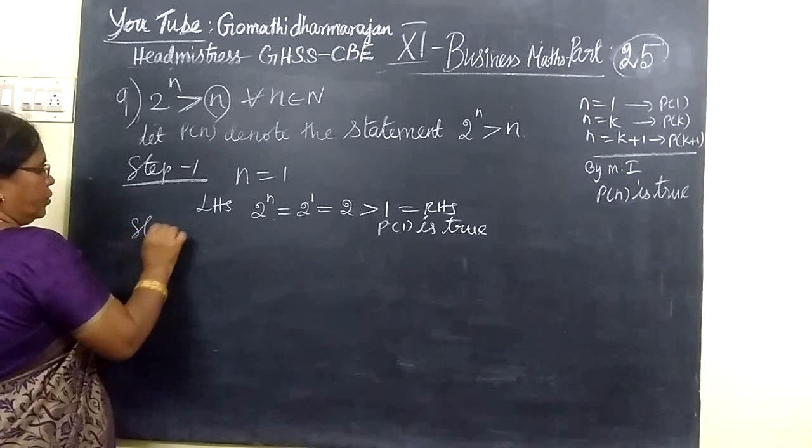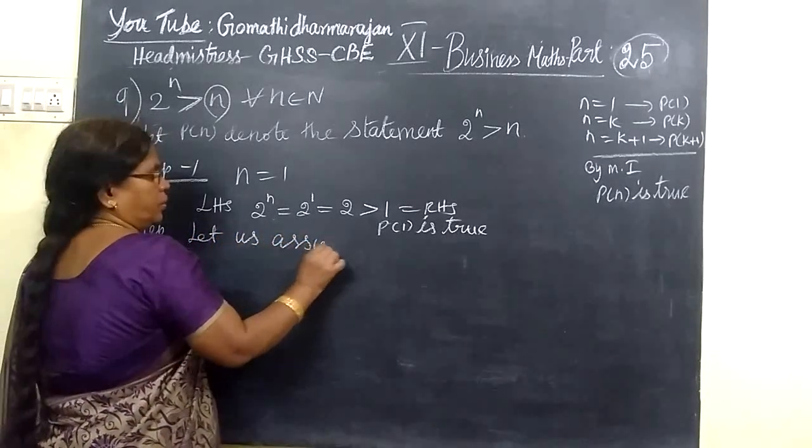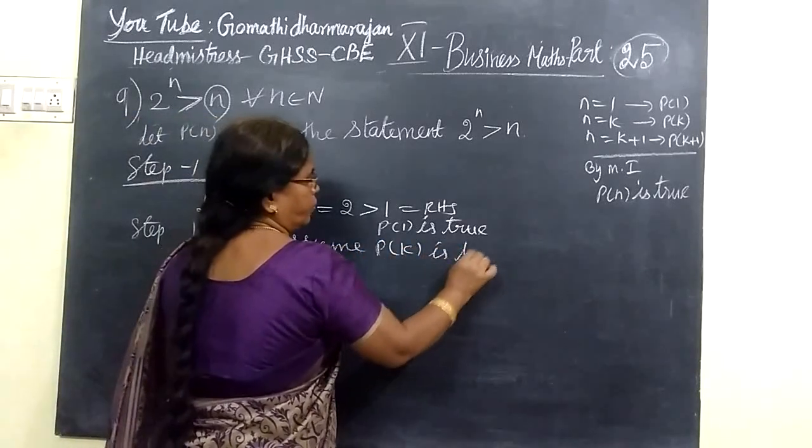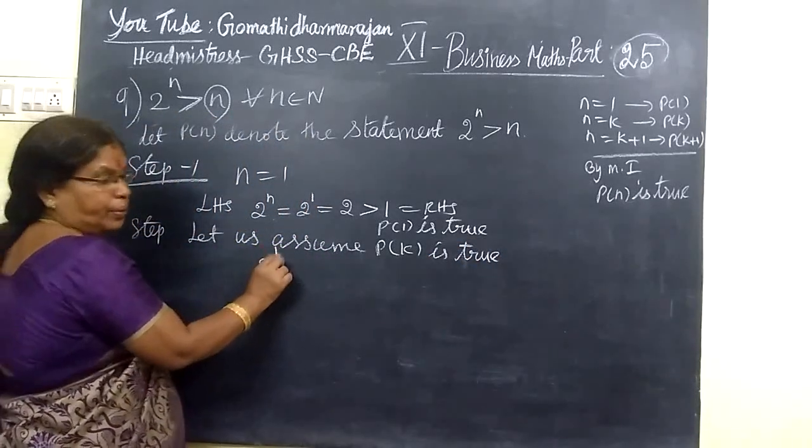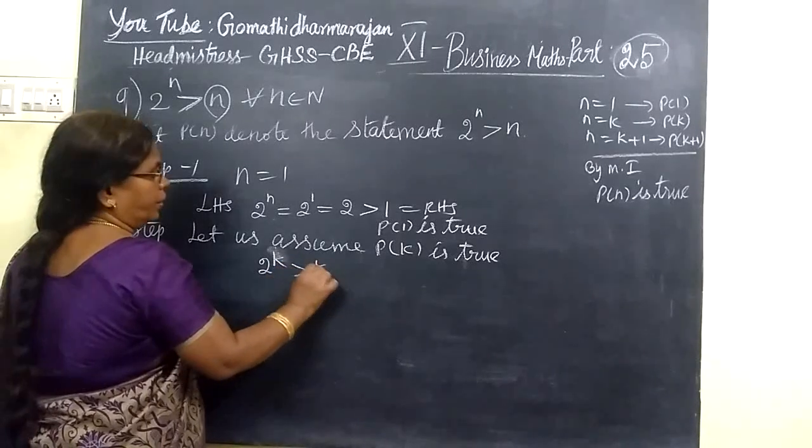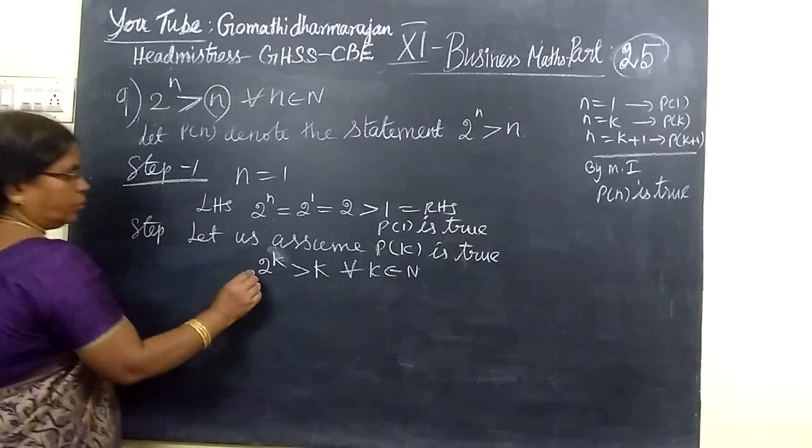Then step 2. Let us assume P of K is true. So how do you say? You may get a statement. n number 1 is K. So 2 power K greater than K for all K belongs to N. So in step 2, step 3 is the number.